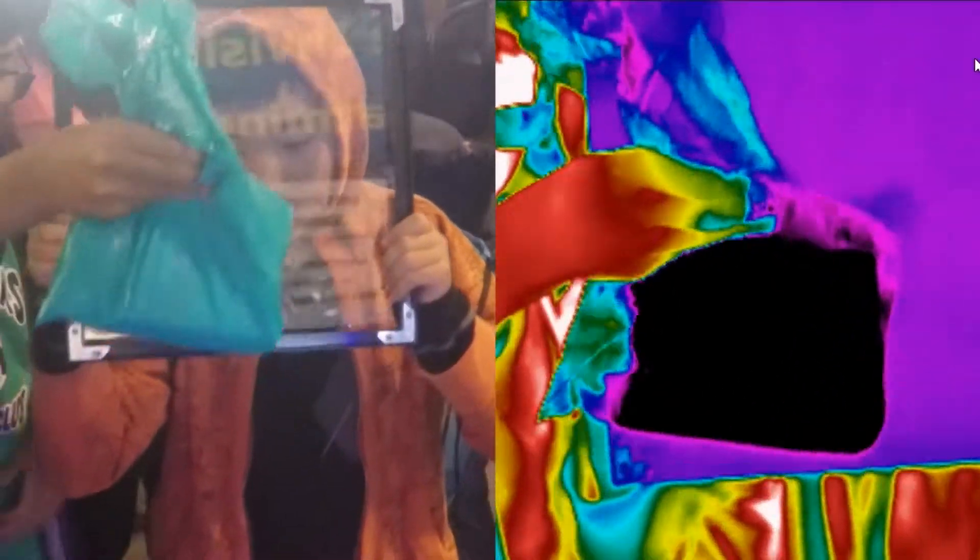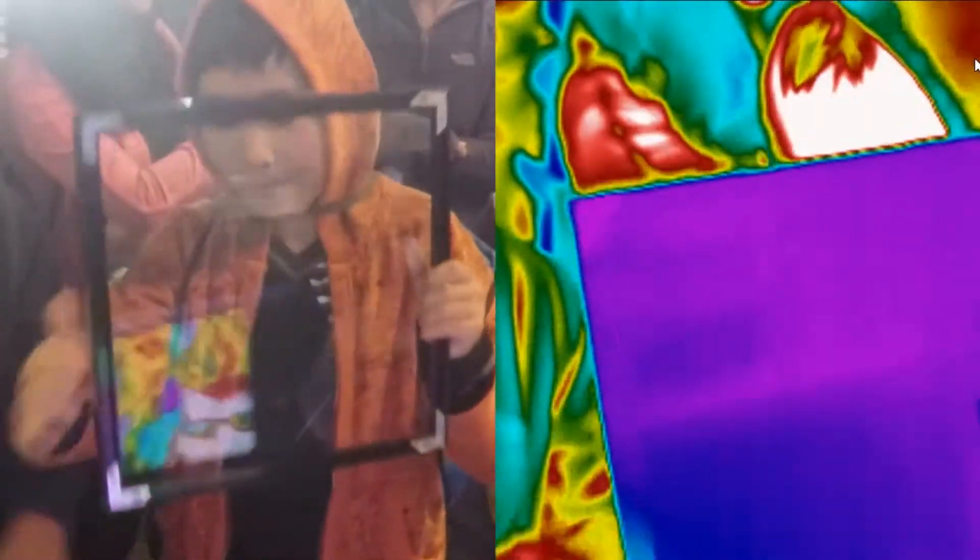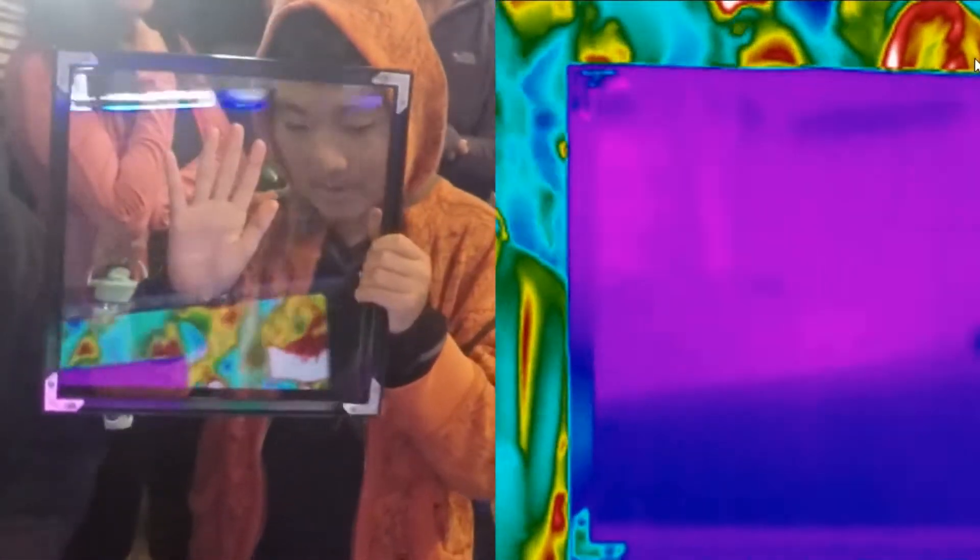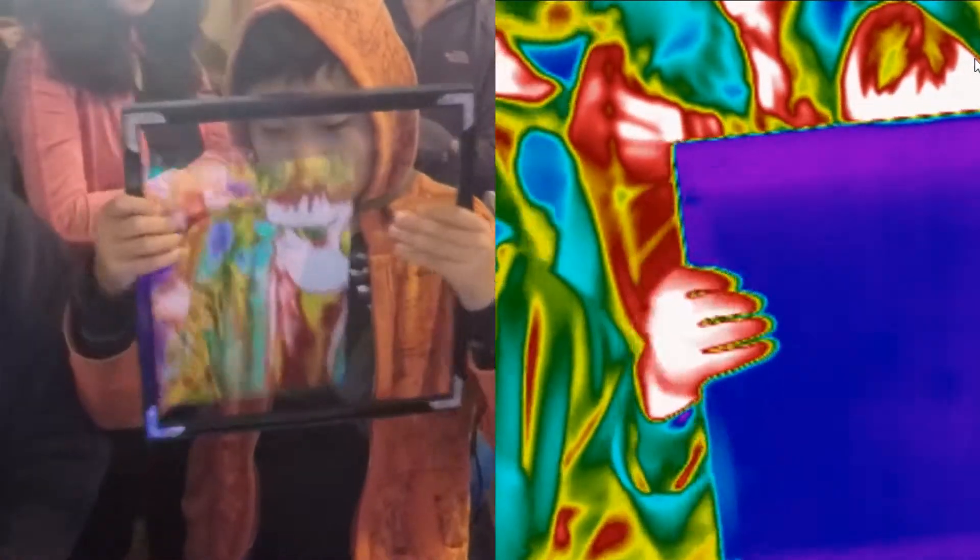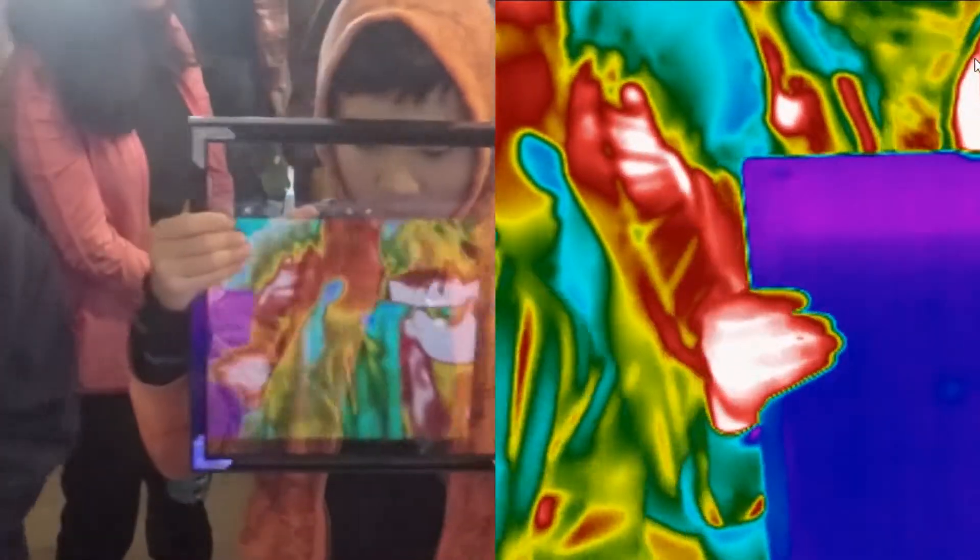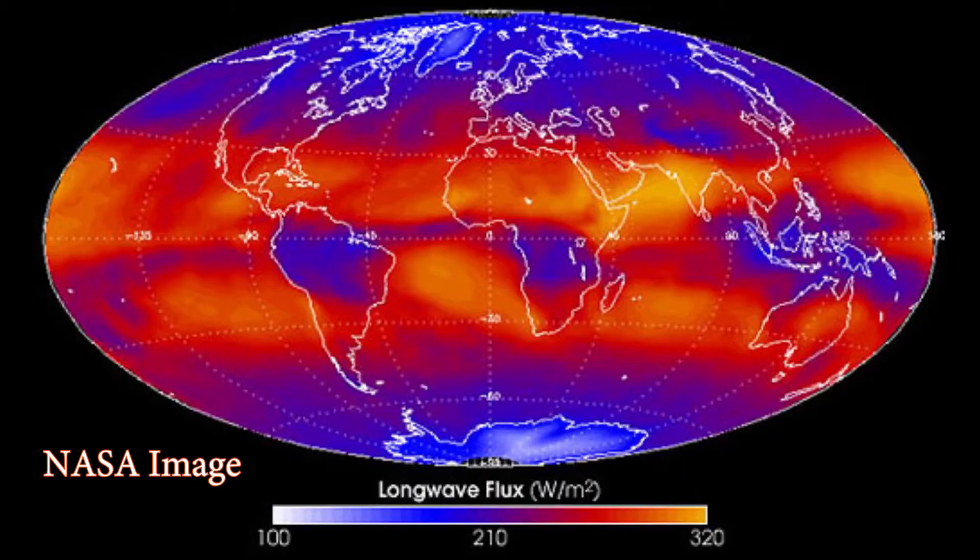Our faces, hands, and clothes contrasted against our surroundings are a great representation for our planet as a whole. This is light produced by our bodies, similar to the way our entire planet produces long wavelength infrared light.